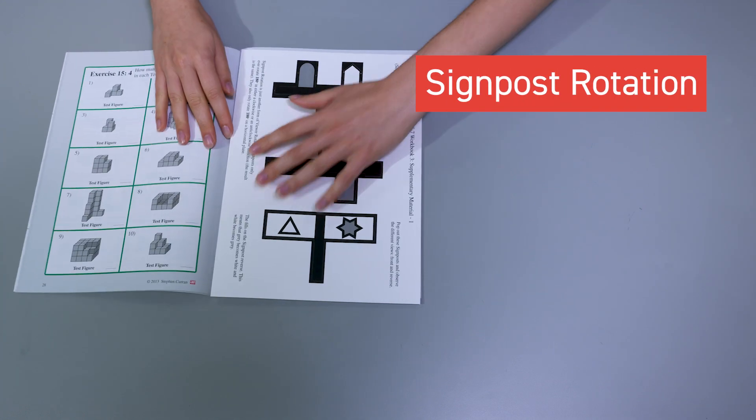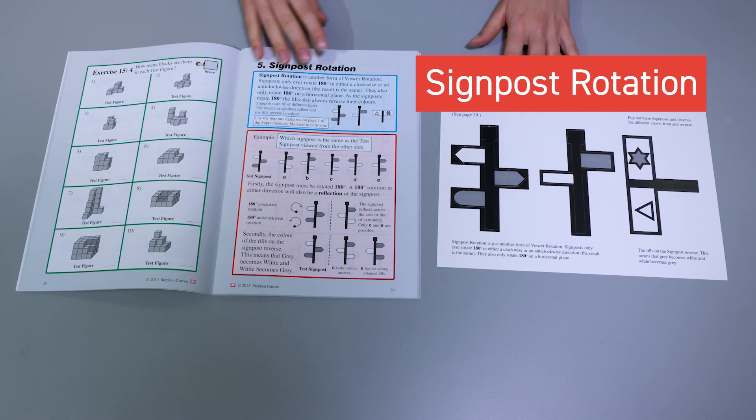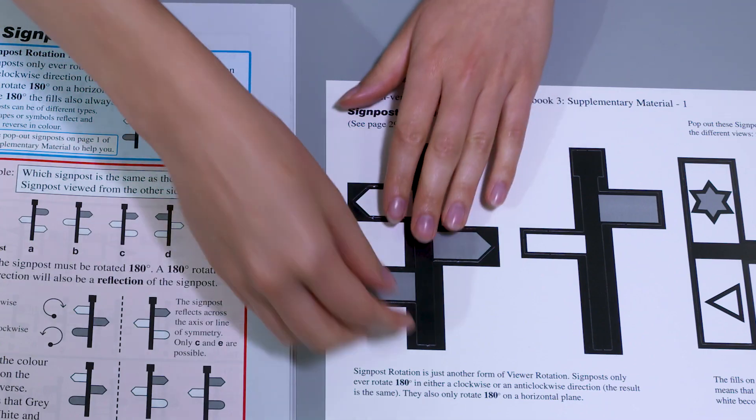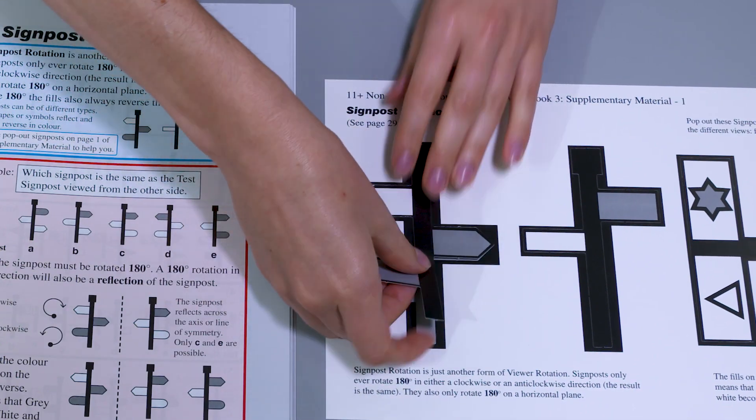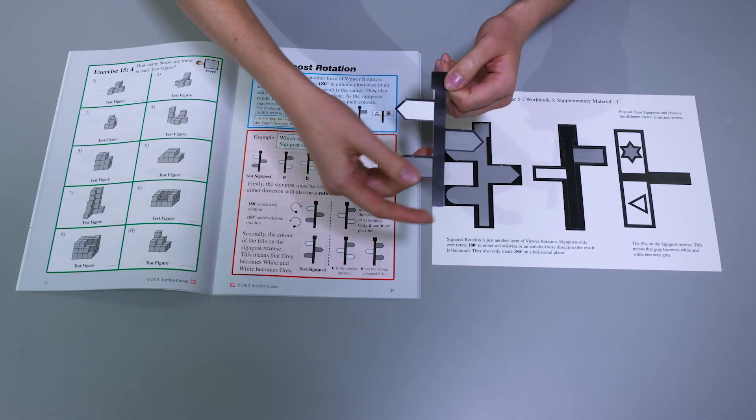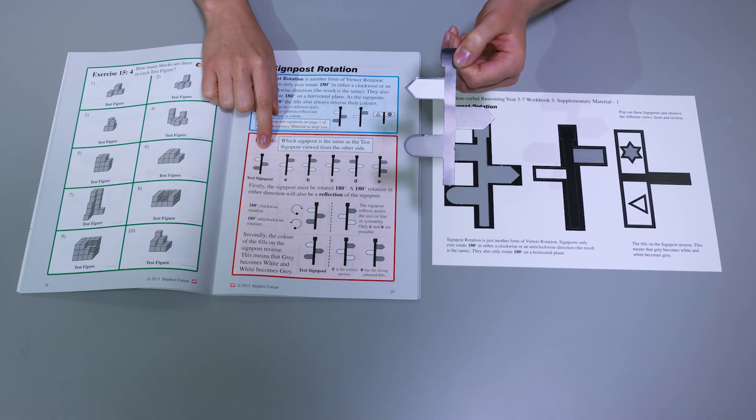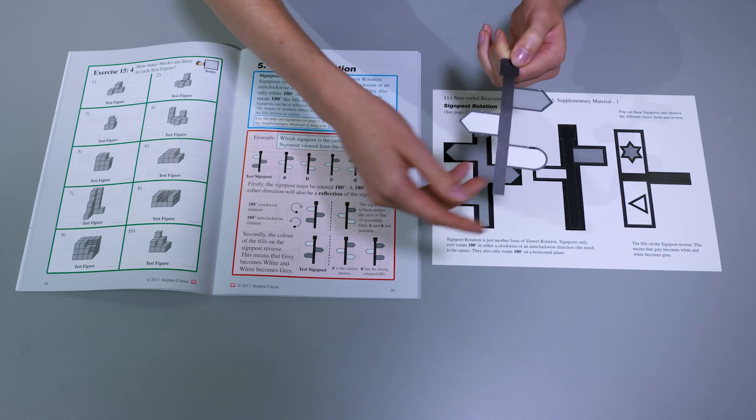Signpost rotation. There are three push-out signposts to make it easier to visualize changes in the fill. These can be used when answering Nonverbal Reasoning questions which involve reverse fills.